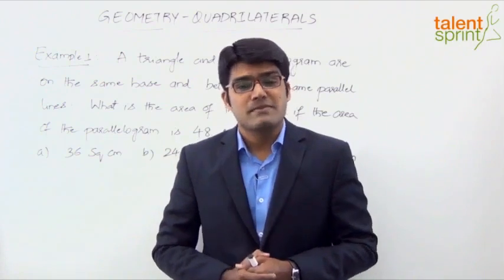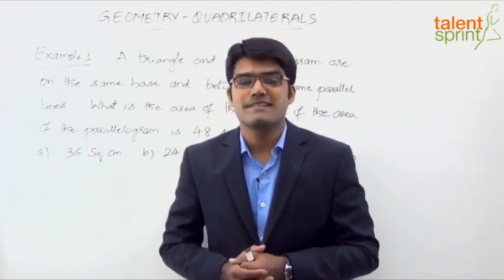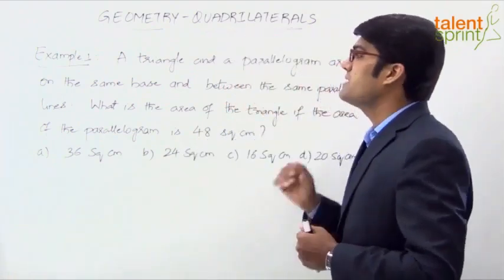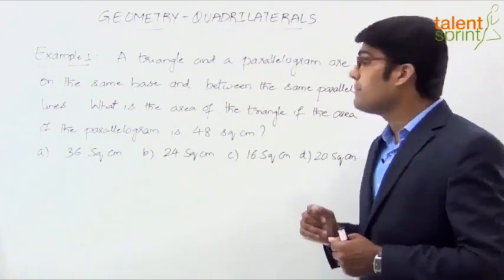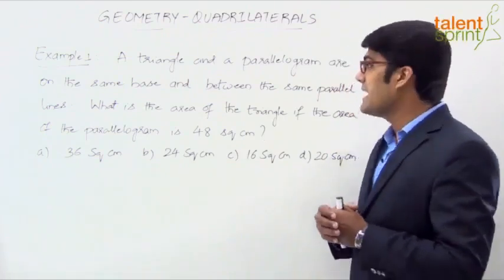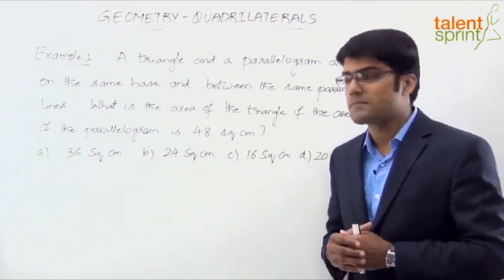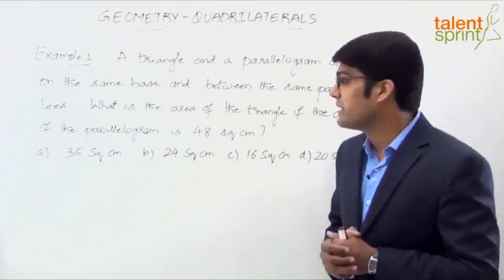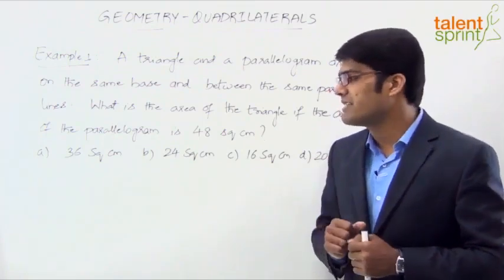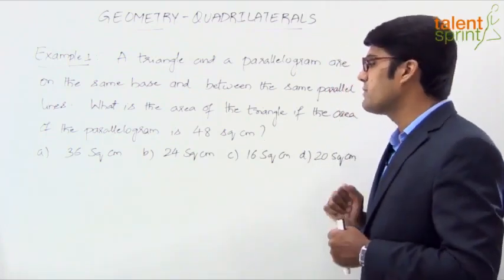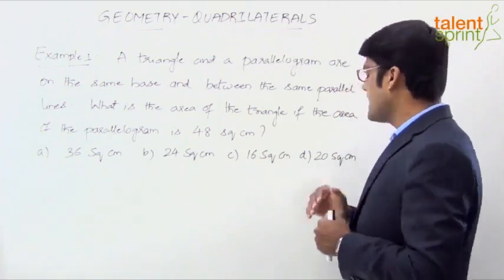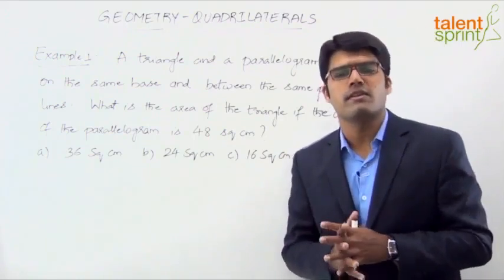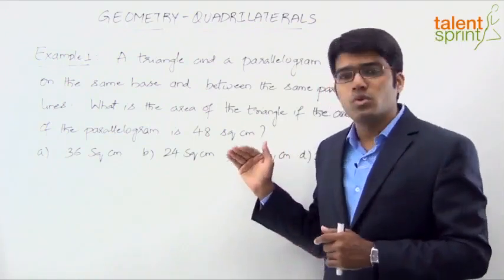Now that we have discussed the different types of quadrilaterals and their properties, let us solve some examples. Example number one: a triangle and a parallelogram are on the same base and between the same parallel lines. What is the area of the triangle if the area of the parallelogram is 48 square centimeters? The answer options are 36, 24, 16, and 20 square centimeters. This is a very standard question from quadrilaterals.